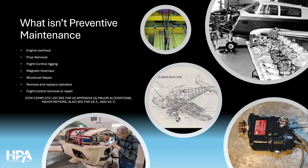So what are some things that aren't preventive maintenance? Again, for the complete list look at FAR 43.3, but some of the things would be engine overhaul, engine removal, prop removal, flight control rigging, magneto overhaul, structural repair, removal and replacement of cylinders, and flight control removal or repair. This is just a small list of things that your A&P would want to do on your airplane instead of having you do it.